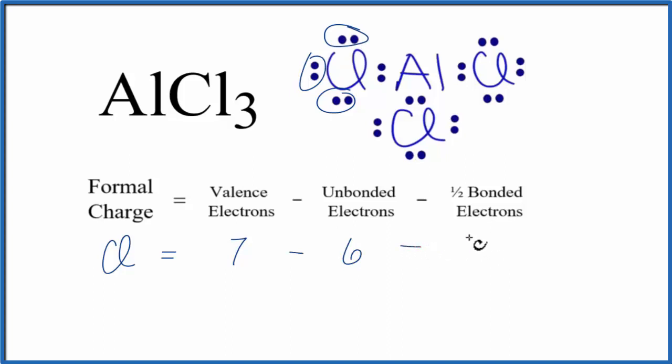From that, we'll subtract 1 half of the bonded electrons. These are the ones right here. They're involved in a chemical bond. They're between the chlorine and the aluminum. That's the bond. So 2 of those divided by 2, 7 minus 6 minus 1,